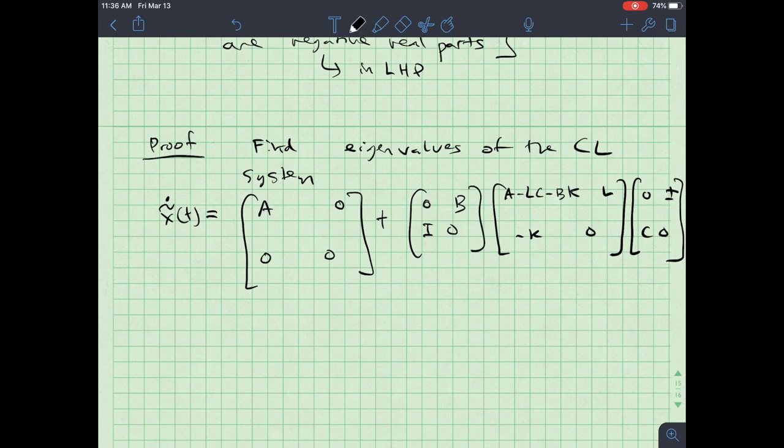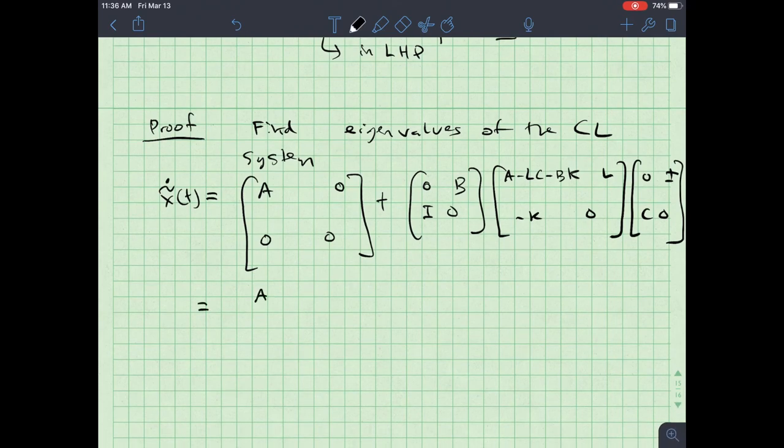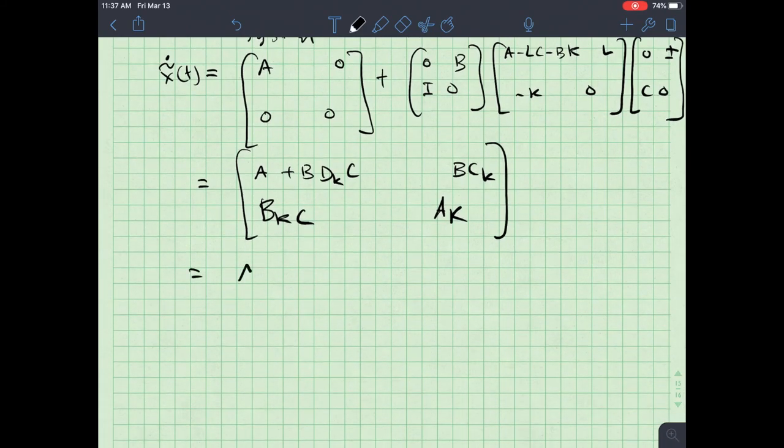So I would multiply all this out. It turns out when I do so, I'm not going to do it all the way out here because of space constraints. I'm going to get a plus B D sub K, which I guess I could leave in, the original values there, but a B D sub K times C B C sub K B sub K C and then a sub K. All right. So in real values here, that's a A because D sub K is zero minus B K L C and then a minus L C minus B times big K.